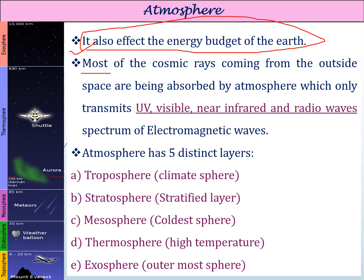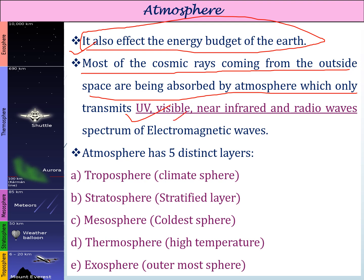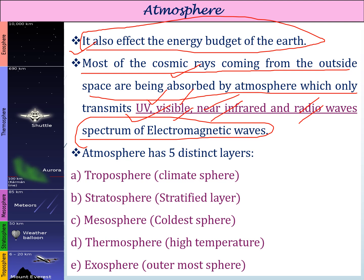Most of the cosmic rays coming from outer space are absorbed by the atmosphere, which transmits only UV, visible, near-infrared, and radio spectrum electromagnetic waves. So the earth absorbs cosmic rays while UV, visible, and near-infrared radio waves are transferred through the electromagnetic spectrum.